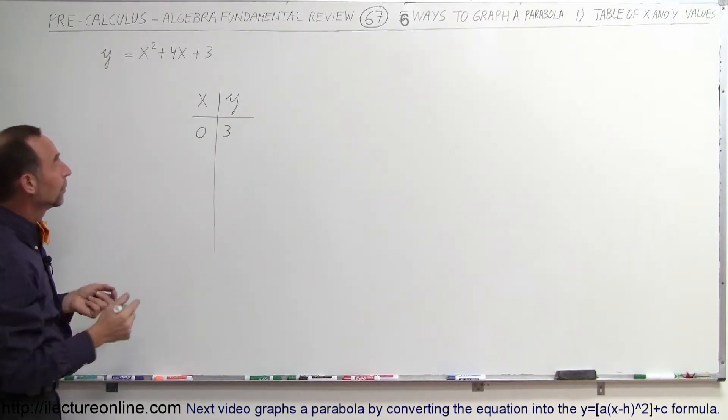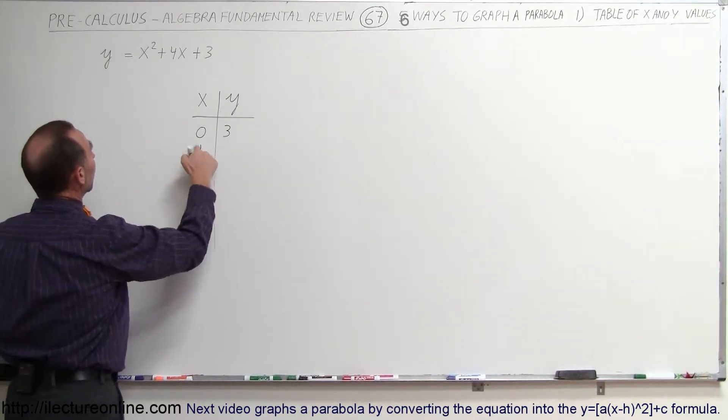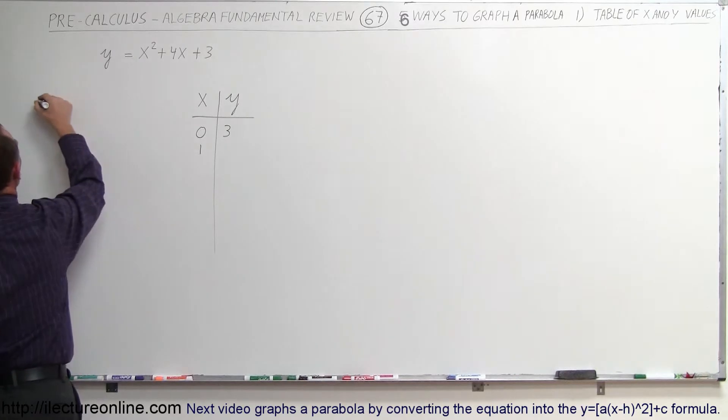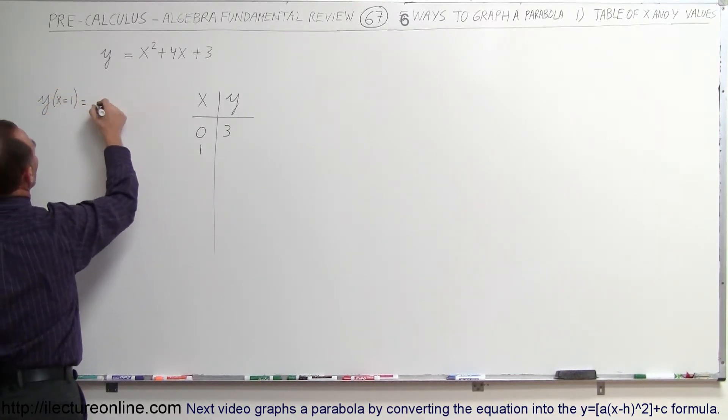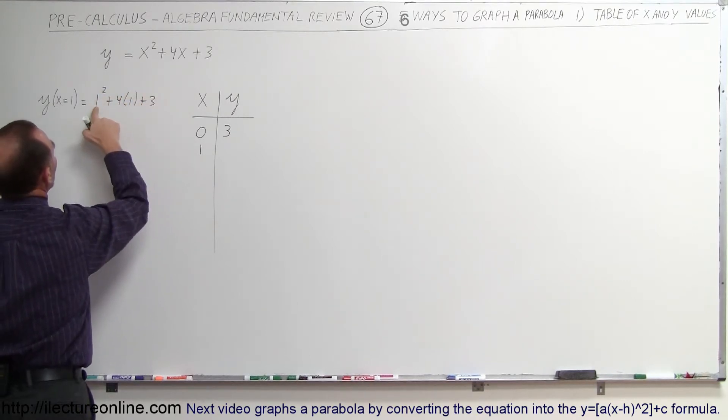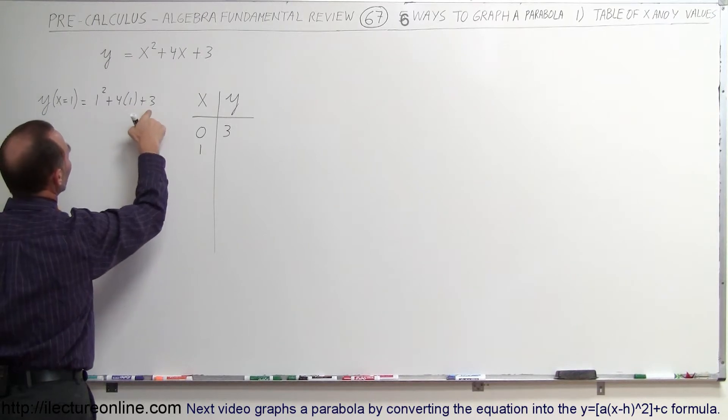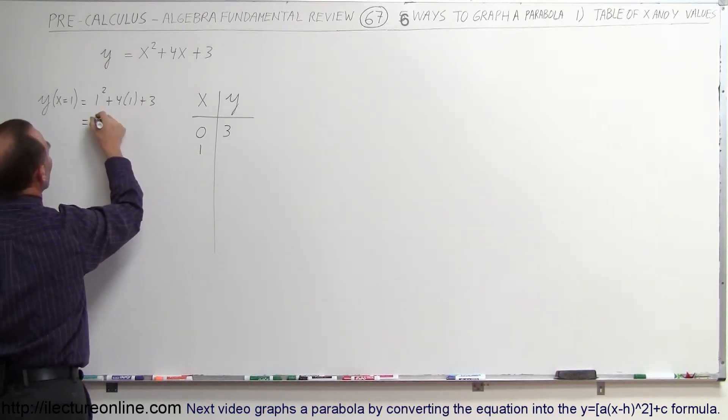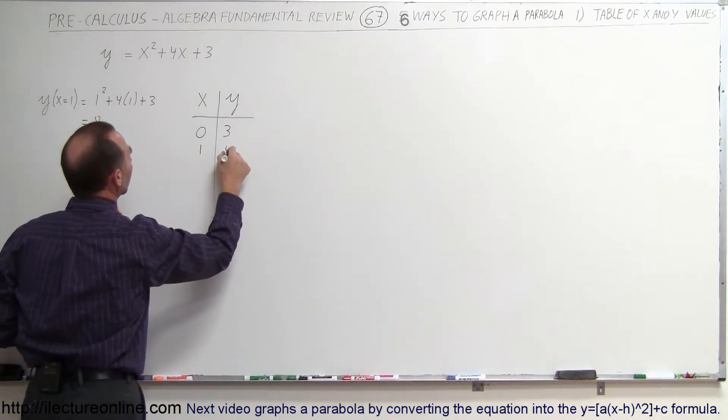Now, what if x is equal to 1? Well, what you want to do then is plug a 1 in for every x, so you write y when x is equal to 1 is equal to 1 squared plus 4 times 1 plus 3. That would be 1 plus 4, that's 5, plus 3, that's equal to 8. So when x equals 1, then y equals 8.